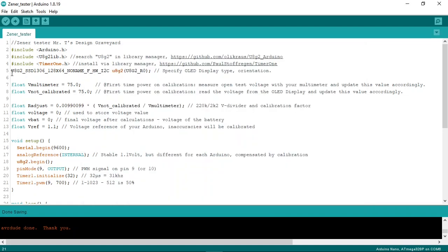The next line is to specify the OLED display and the orientation. Then here we have 2 floating points for a 1 time calibration. This is to compensate for all tolerances in the circuit. I will show you later how to do that. This line calculates the factor for the voltage divider of 2K2 and 220K and the calibration. And this is the internal reference voltage of the Arduino. It is different for each Arduino but it is very stable. The calibration will compensate for all tolerances.